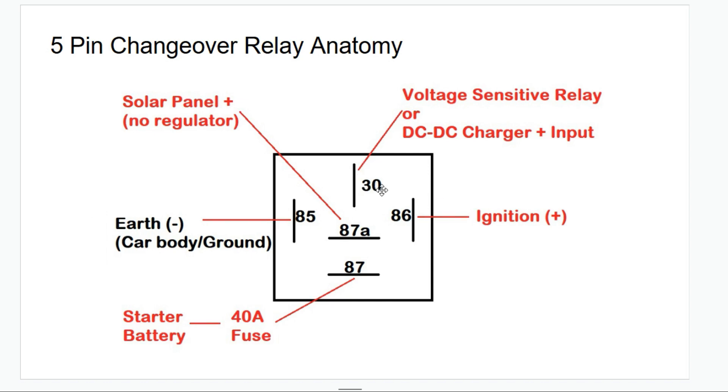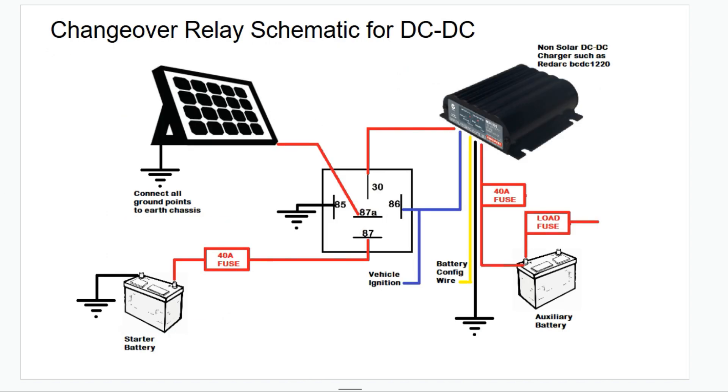Pin 30 is connected to the input of your voltage sensitive relay or your DC to DC charger. Pin 86 goes to your ignition positive, 87A goes to your solar panel, and 85 is an earth or ground. So that is earth down to the chassis.